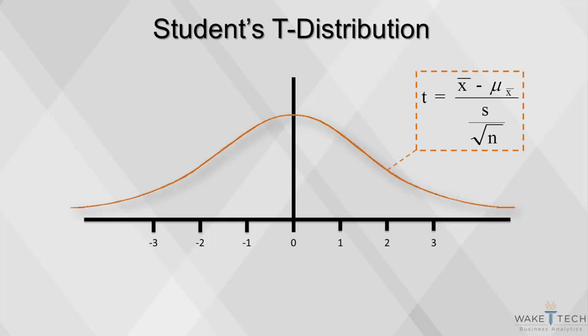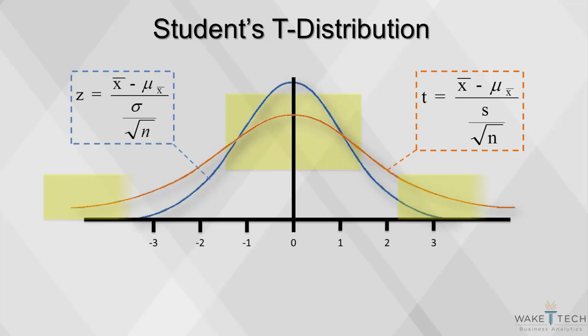In this figure, both distributions have zero means, but the variances are a bit different. The t-distribution has a lower peak and fatter tails.